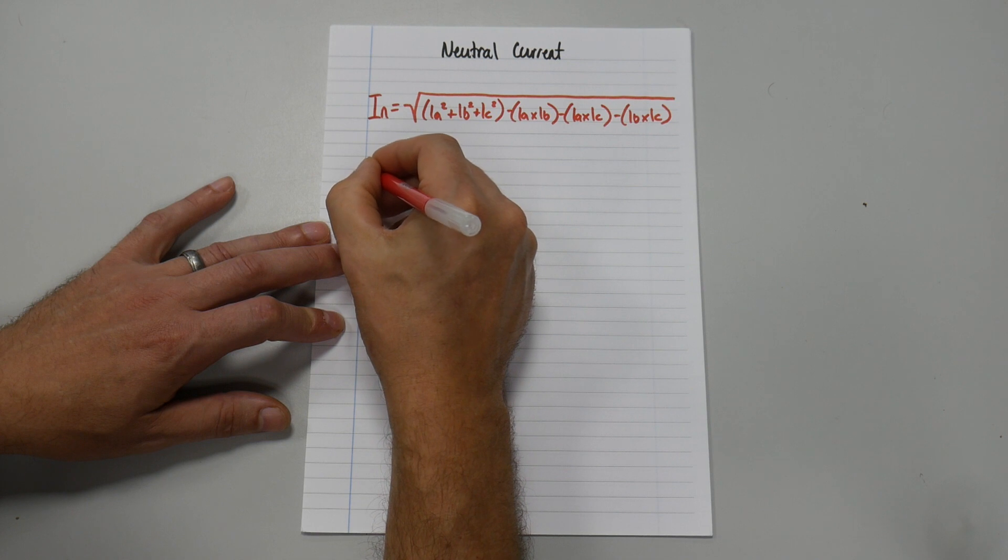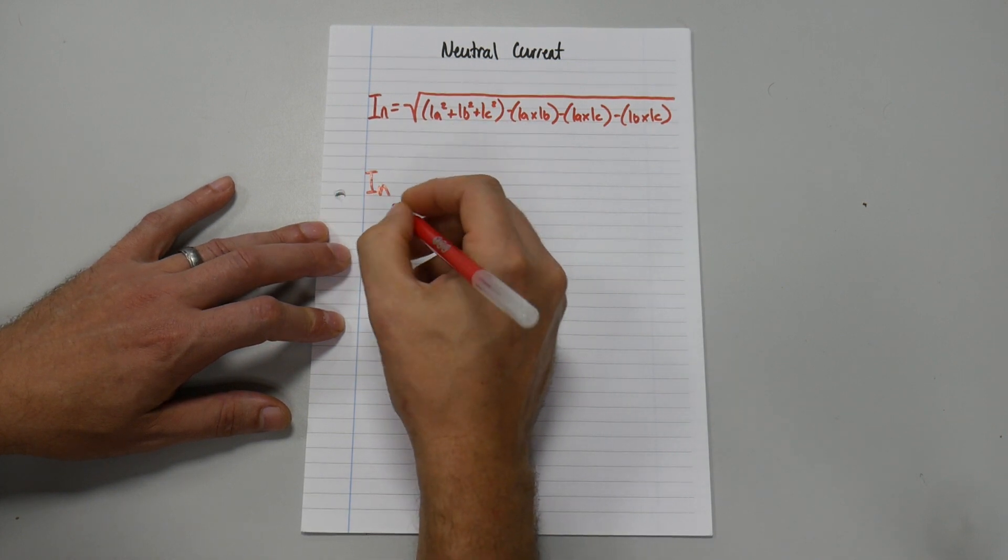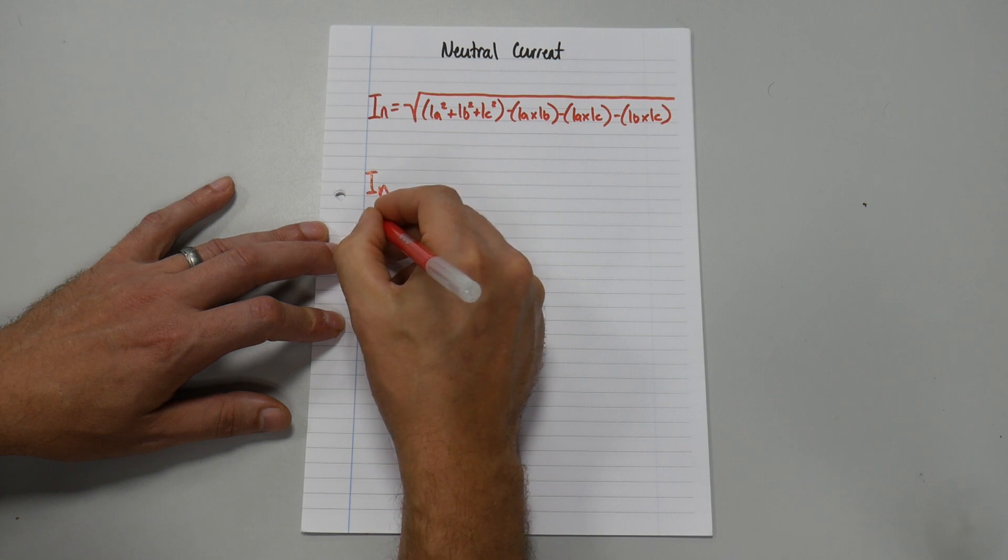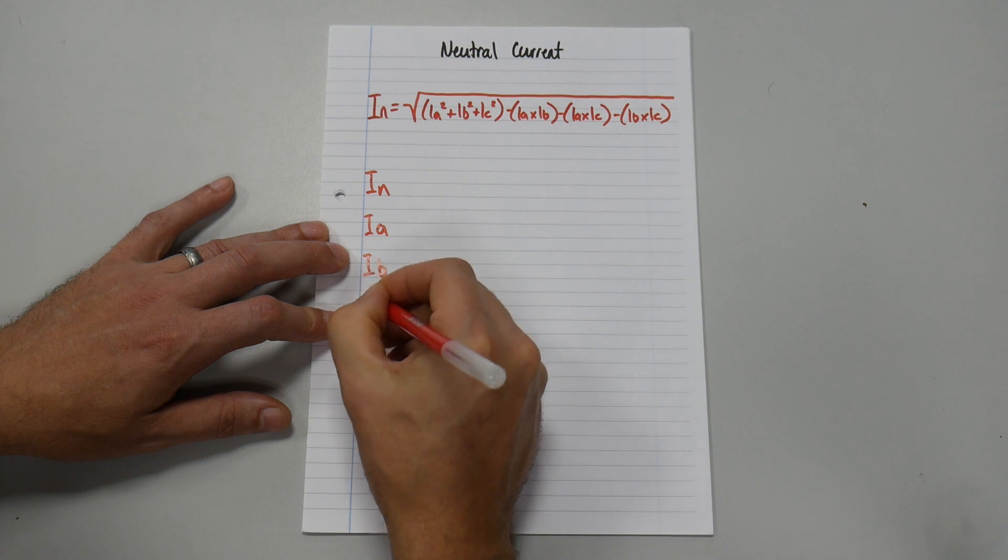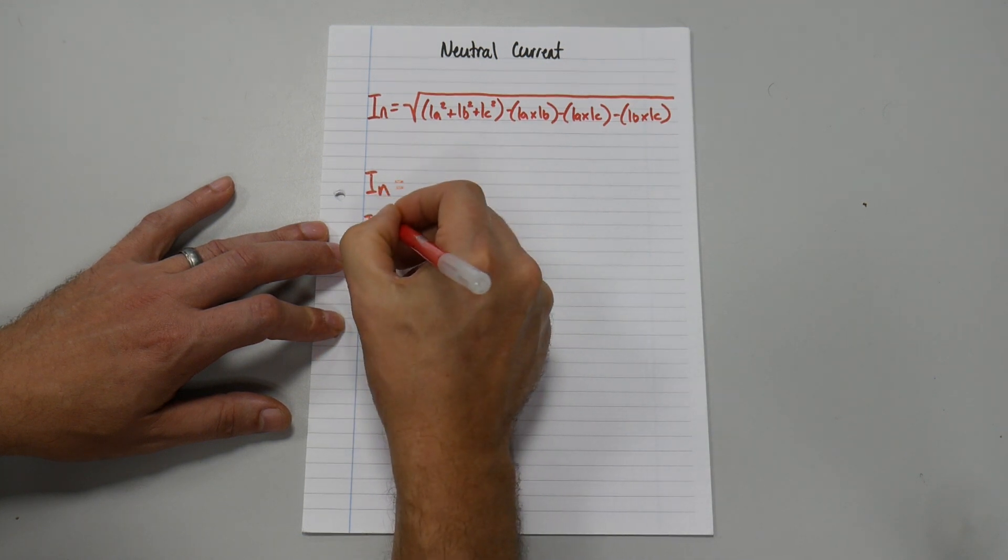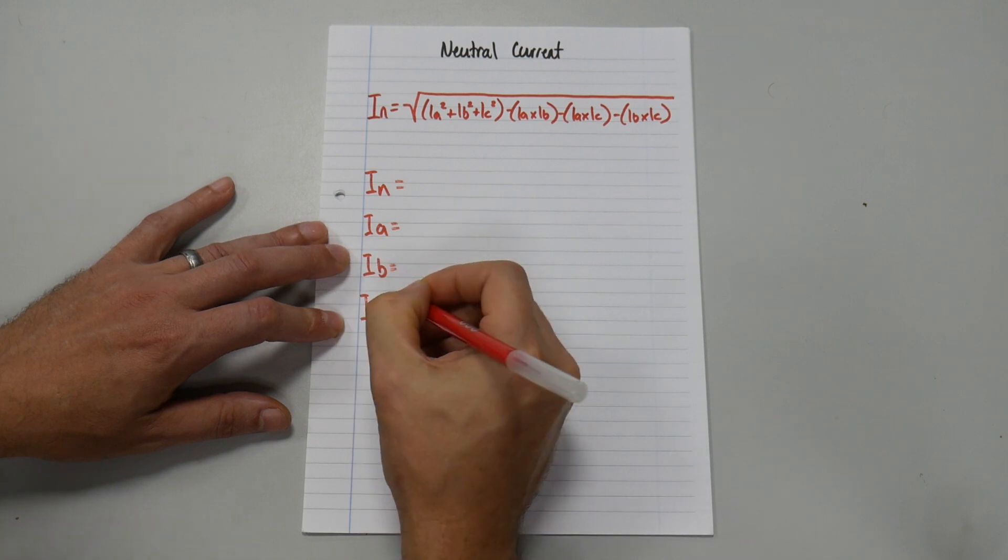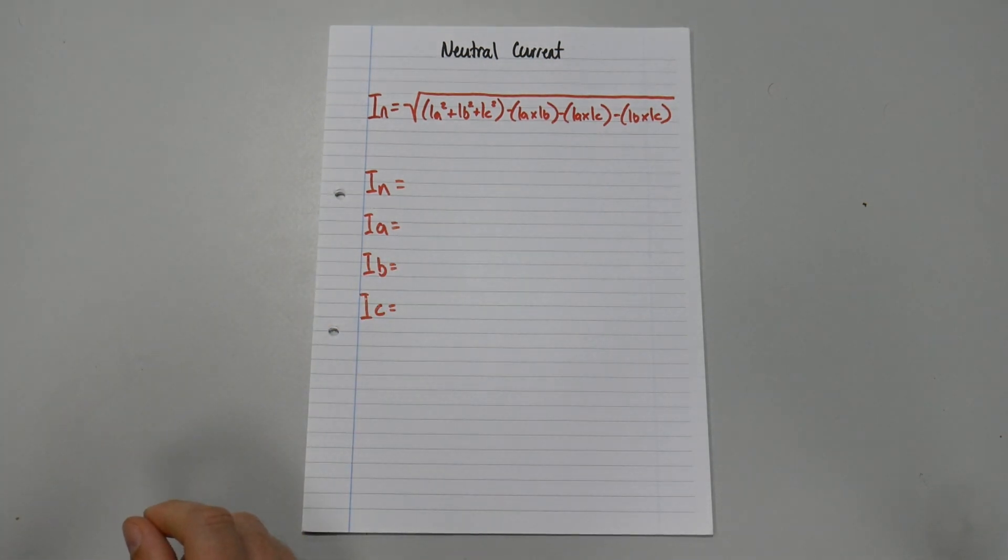So let's write down what each symbol means. We have I n, we have I A, I B, and I C. Let's just change my pen.